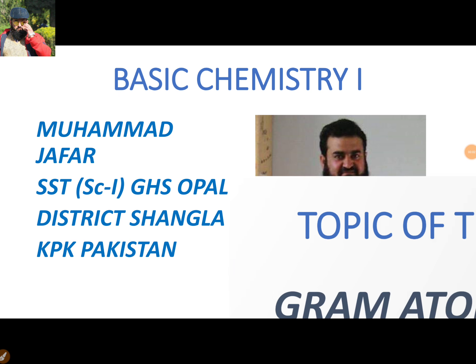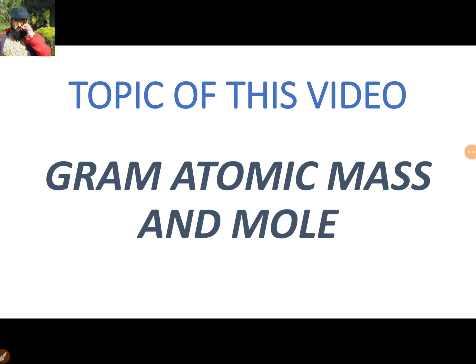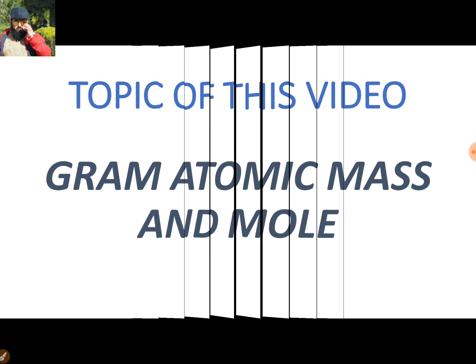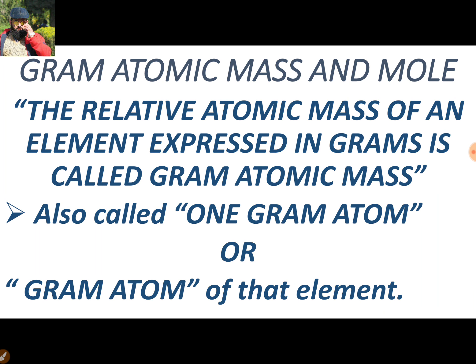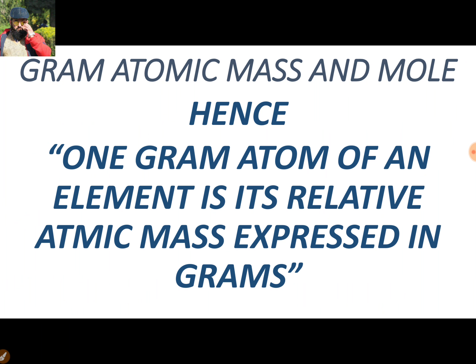Welcome to Basic Chemistry 1. The topic of this video is gram atomic mass and mole. First, we will have a definition of gram atomic mass. The relative atomic mass of an element expressed in grams is called gram atomic mass. This is also known as one gram atom, or simply the gram atom of that element. Hence, one gram atom of an element is its relative atomic mass expressed in grams.